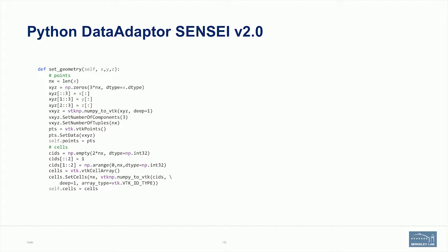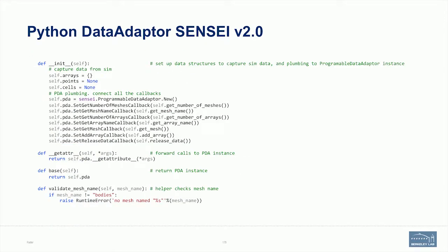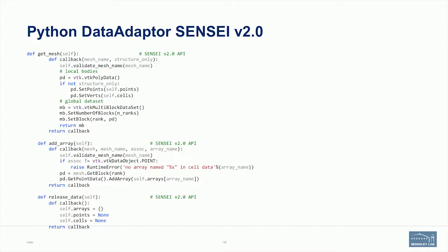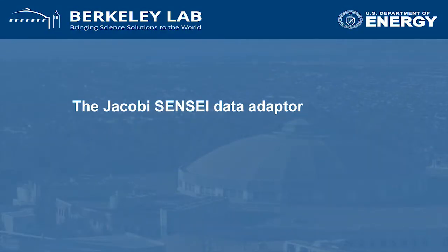The takeaway from this is that it's implemented with callbacks. You can create a class, have an instance internally of the Sensei programmable data adapter, and in your constructor create it and put all of the callbacks in. The trick to doing this is using a closure so you can access the self member to get class state — we'll use it there to get cached values. With that, we can move on to the exercise of instrumenting the Jacobi code and creating a Sensei data adapter.